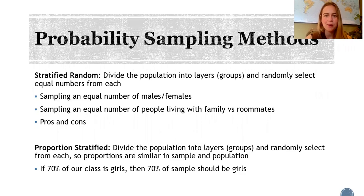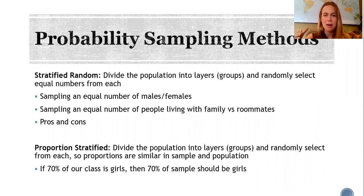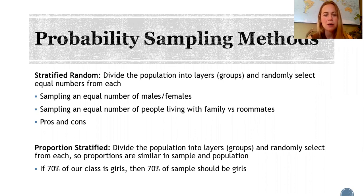For example, our class tends to have more girls than guys. If we selected an equal number of girls and guys, the sample is no longer representative of the actual class. Proportionate stratified sampling addresses this: if there are 70% girls in the target population, we ensure our sample also has 70% girls. We divide the population into groups and randomly select so that the proportion in our sample mirrors the proportion of those subgroups in the target population.